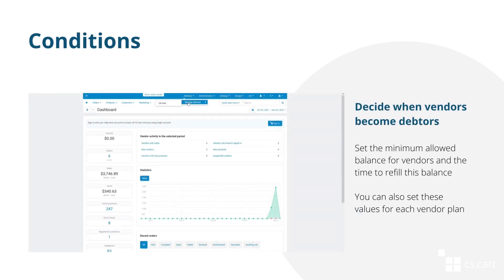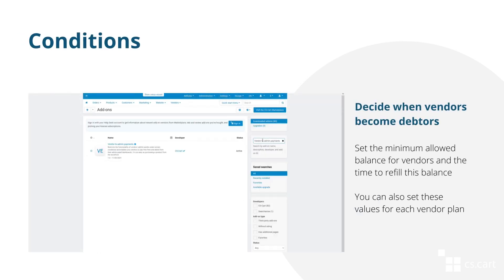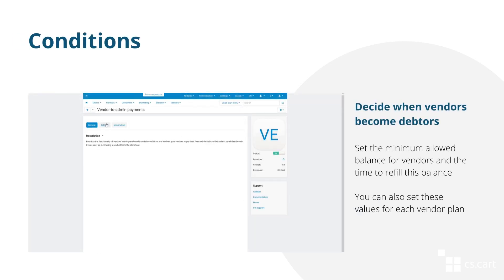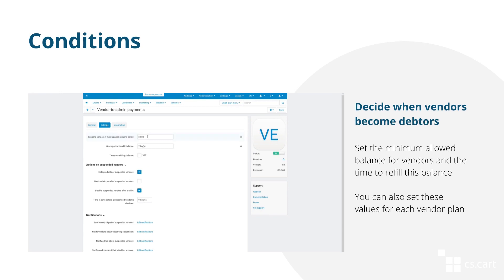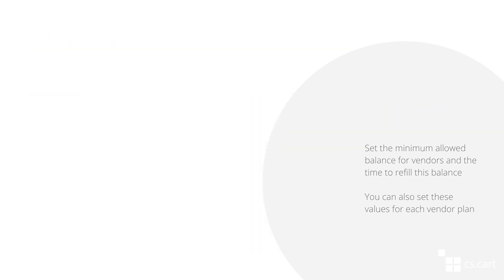In the settings of the vendor-to-admin payments add-on, you can set the minimum allowed balance for vendors and the time to refill the balance after it goes below that point. When a vendor reaches this balance and they don't refill the balance in time, they become a debtor. These parameters can be set globally or for each vendor plan.